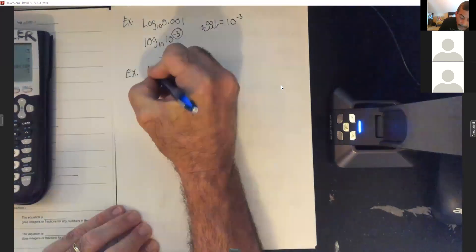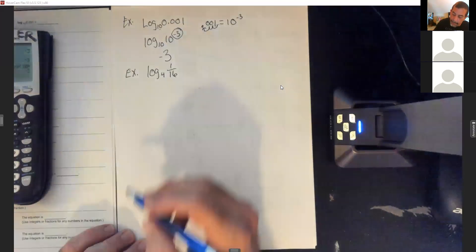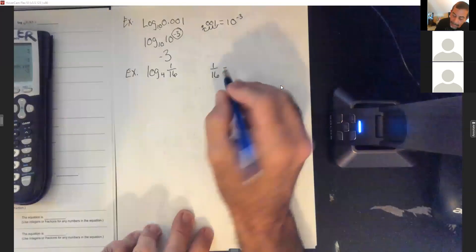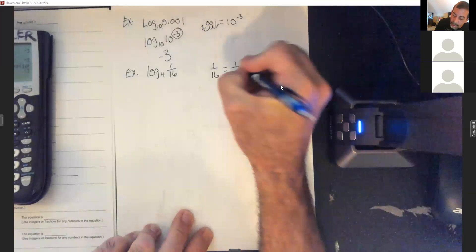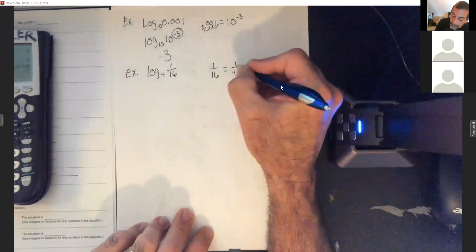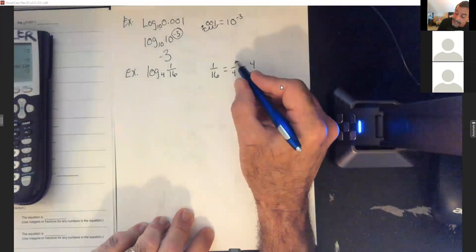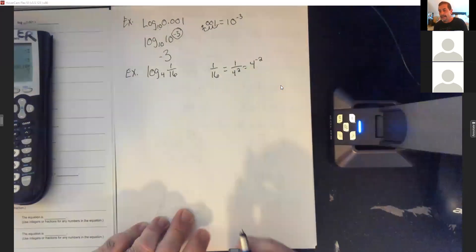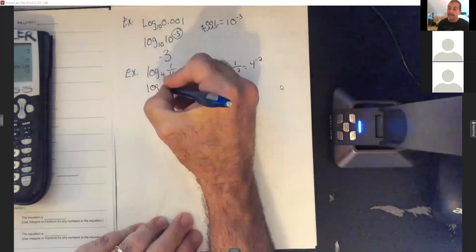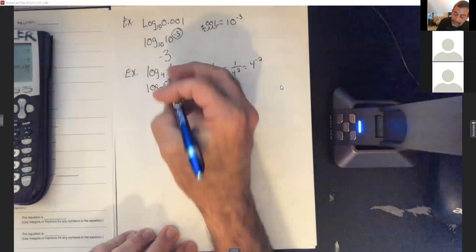Next: log base 4 of 1/16. By hand, rewrite 1/16 as 4 to an exponent. First, 16 = 4 squared. Since we don't want the 4 on the bottom, move it to the top — but when you move from bottom to top you change the exponent sign from positive to negative. So 1/16 = 4 to the negative 2, giving us log base 4 of 4 to the negative 2. The base matches the result, so the answer is that exponent: negative 2.